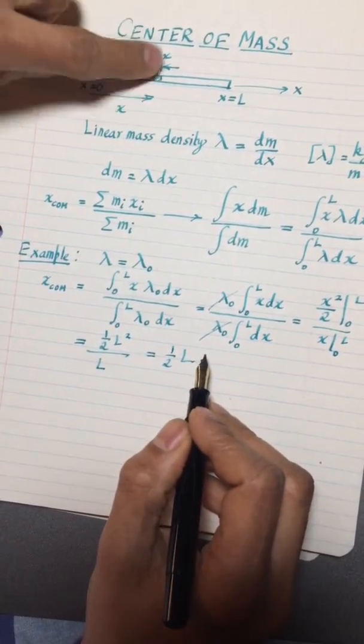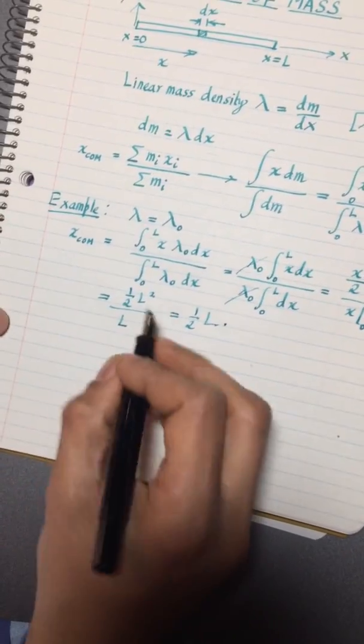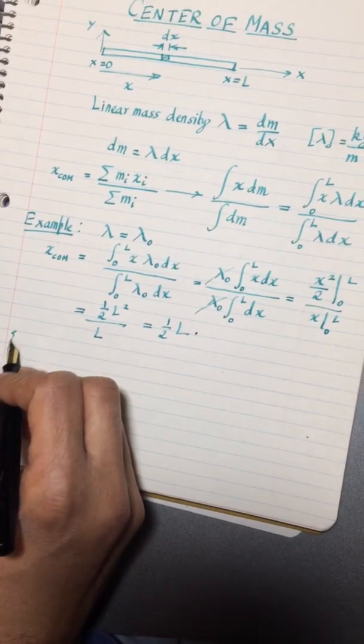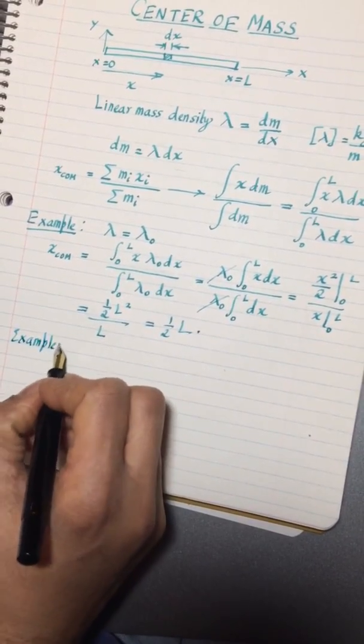A rod that's uniform should have its center of mass exactly in the middle. So let's take another example, slightly better example. This bears out what we already know.